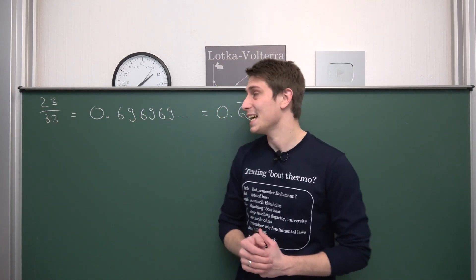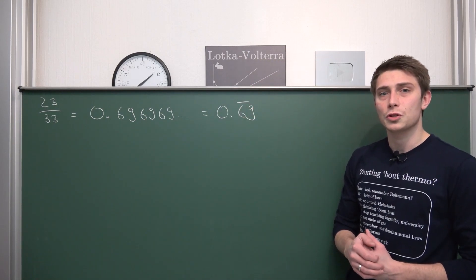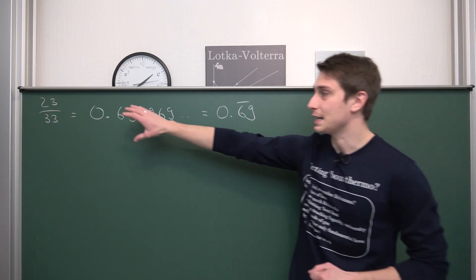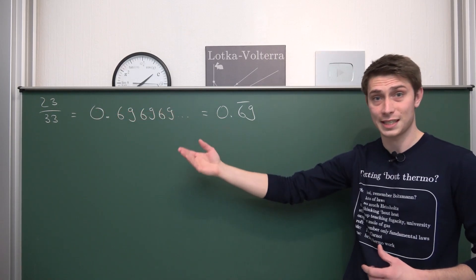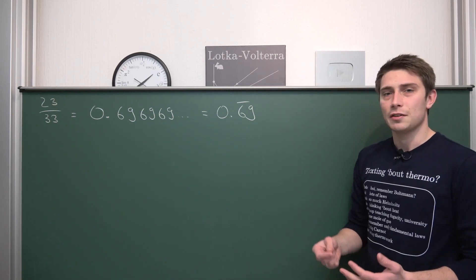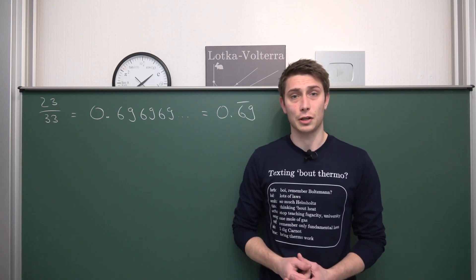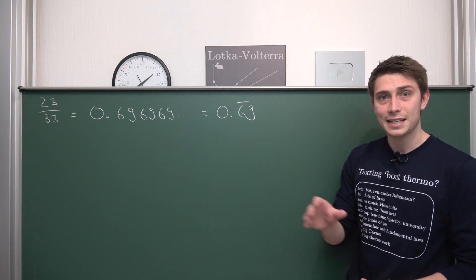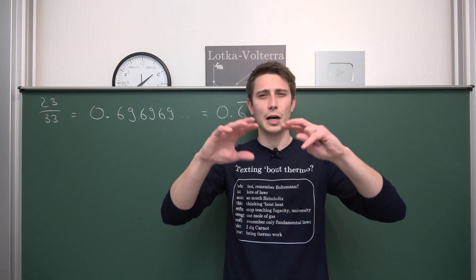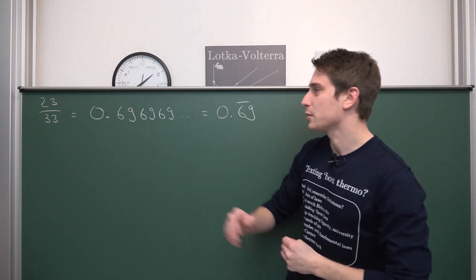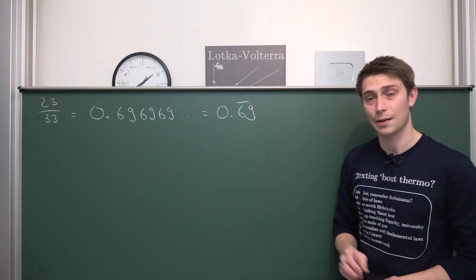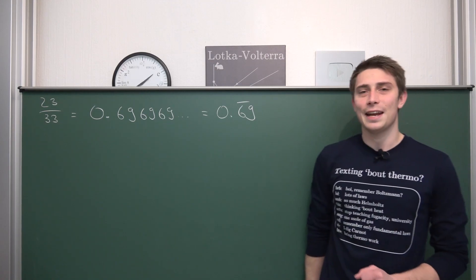We are going to go through the process of proving how we can turn a repeating decimal like 0.6969... up until infinity into a fraction. This is a very nice easy proof. Later, I think on Monday, I'm going to post a proof about the generalized case when you don't have a zero in front and when the repeating decimals come after a few other decimal places.